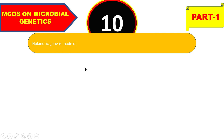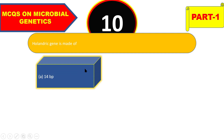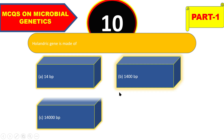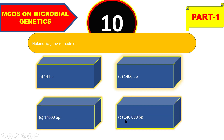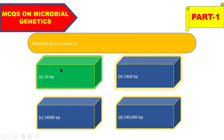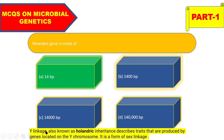Next question: hollandric gene is made of 14 base pairs, 1400 base pairs, 14,000 base pairs, or 140,000 base pairs? The right answer is 14 base pairs. A hollandric gene — also known as Y-linkage gene — describes traits produced by genes located on the Y chromosome. It is a form of sex linkage.